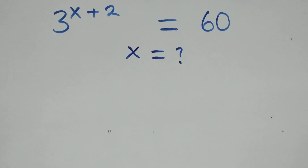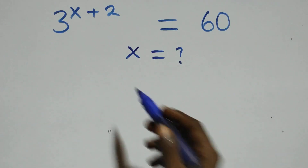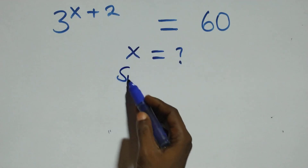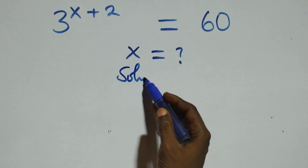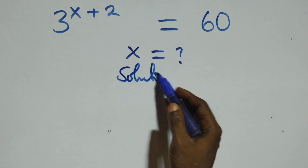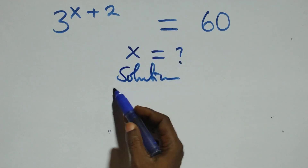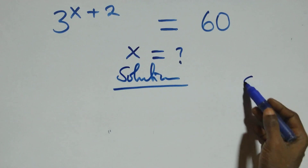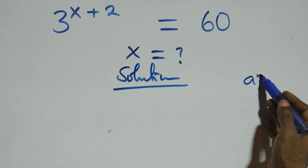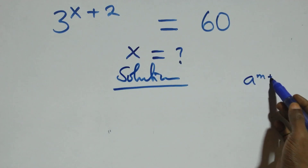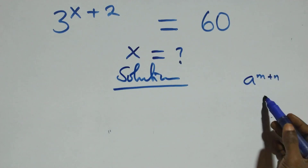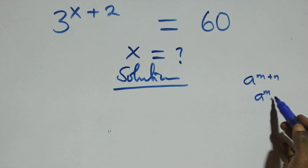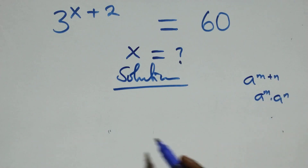Hello, you are welcome. How to solve this nice exponential equation. What we have here is the following: a to the power n plus n is the same as a to the power n times a to the power n.